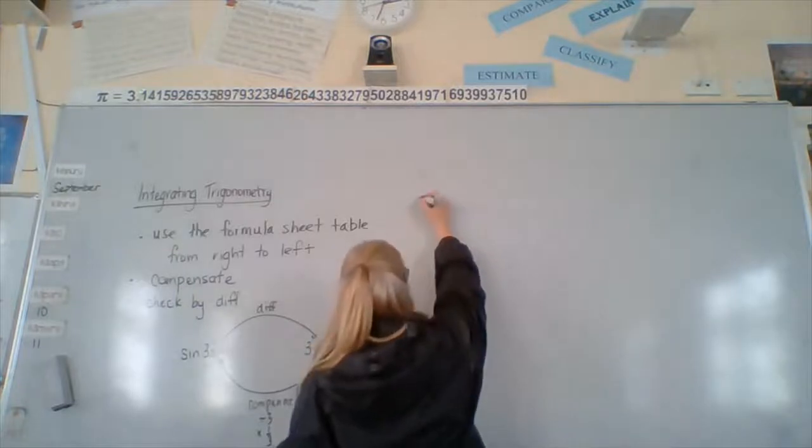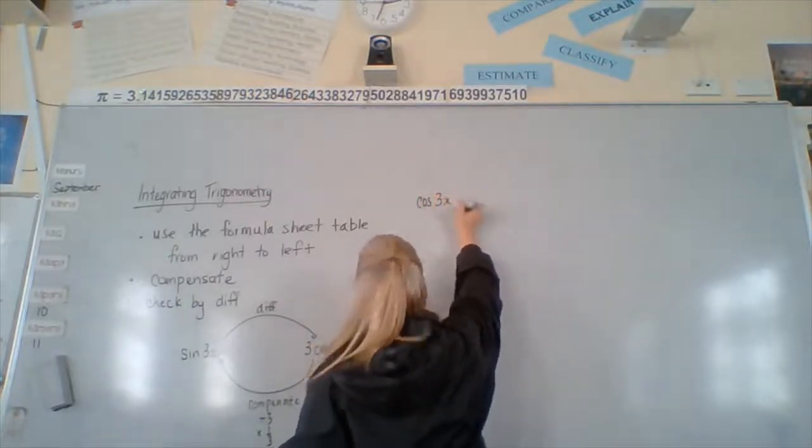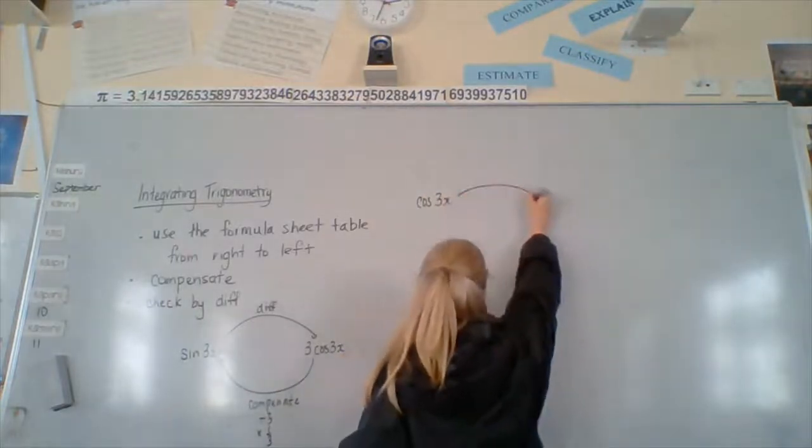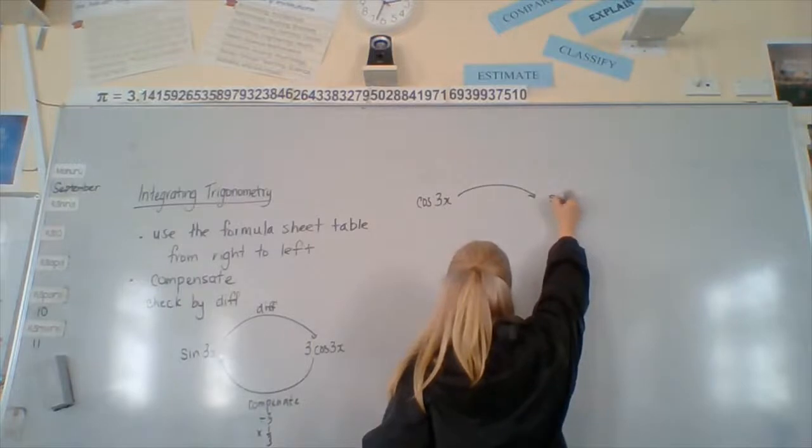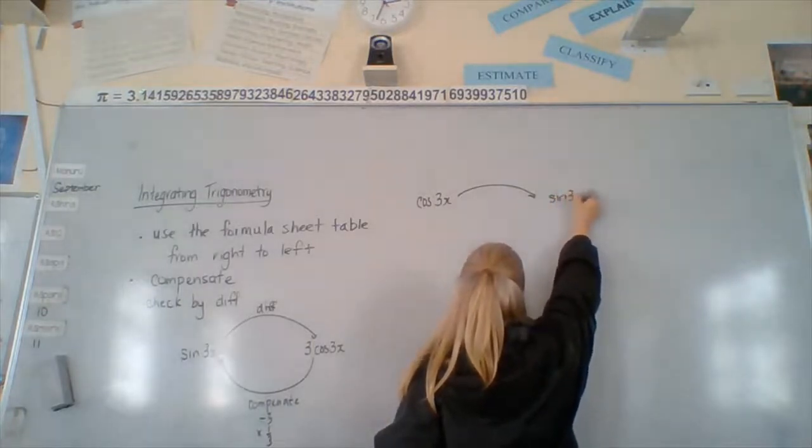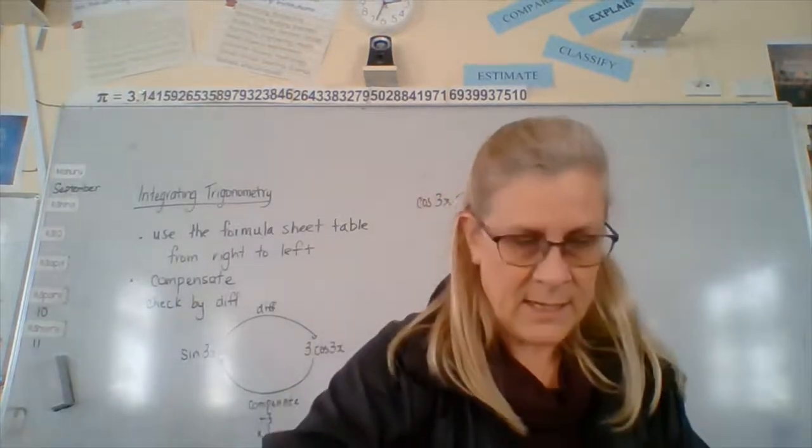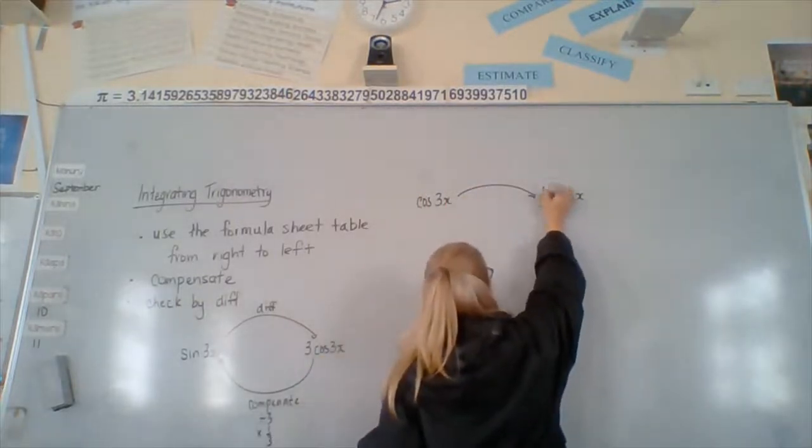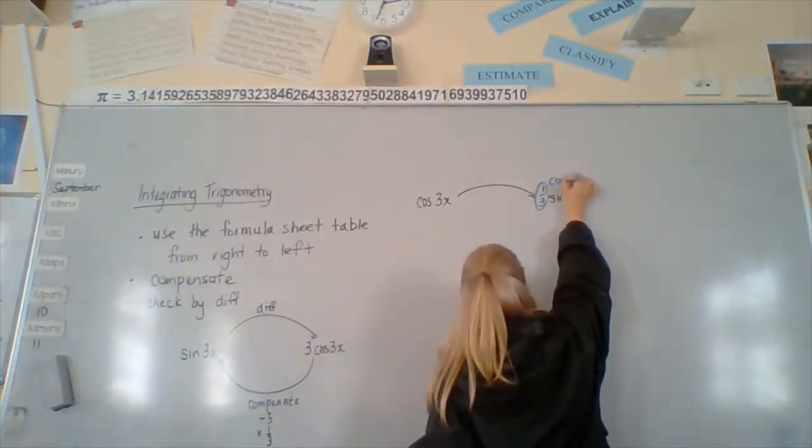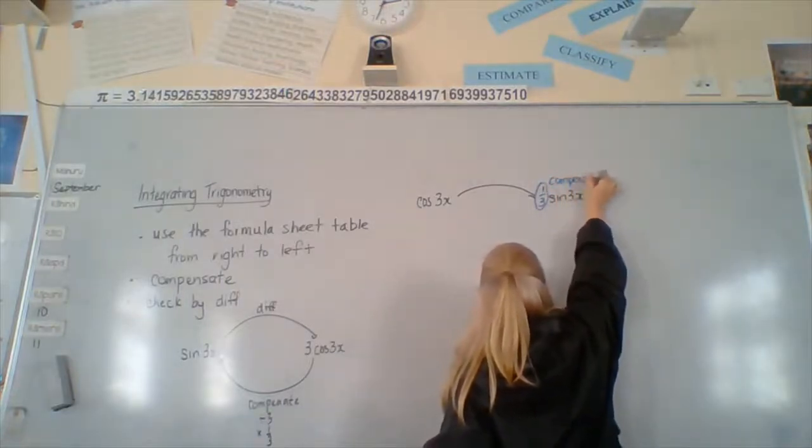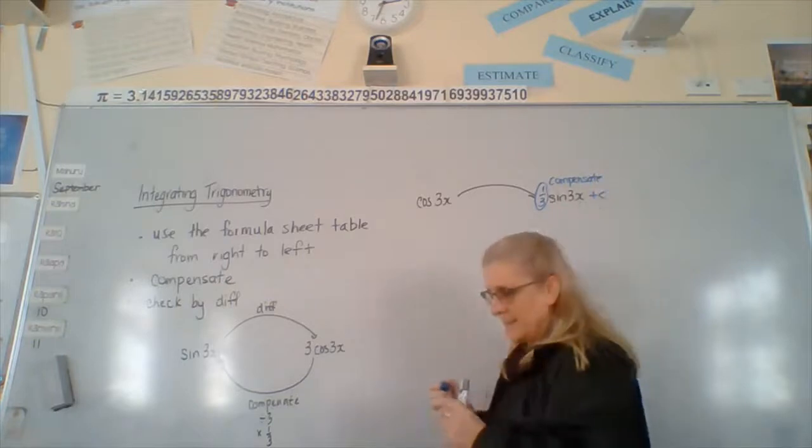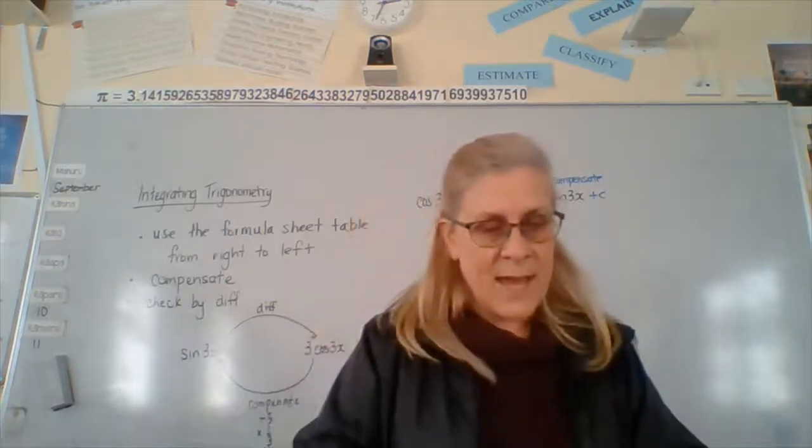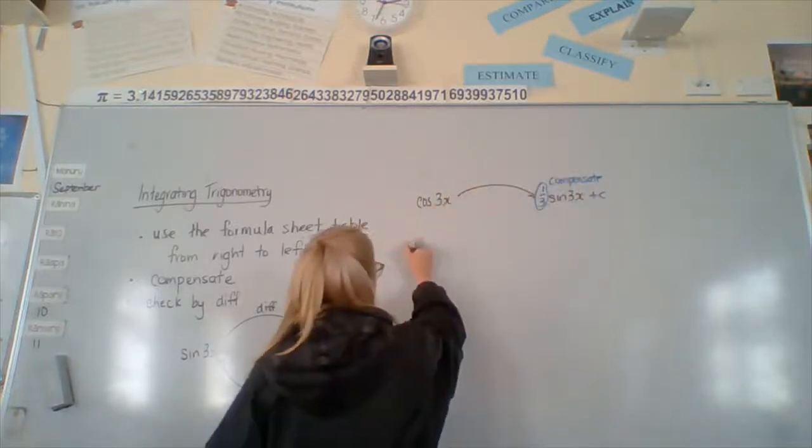So, do you compensate by timesing 1 over the differential? Yes. Okay. So, cos goes to sine 3x. And then we get that 1 third. And plus c. And then you can check that by differentiating. And yes, it'll come out. So, let's have a look at some examples.